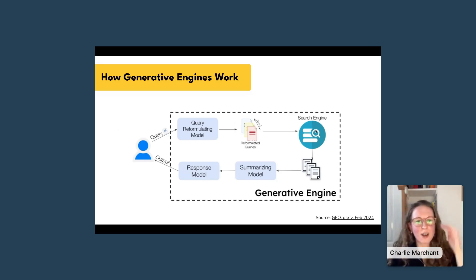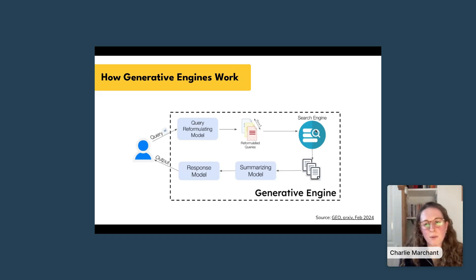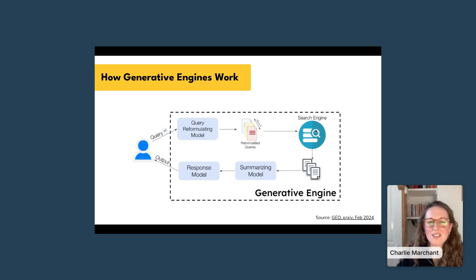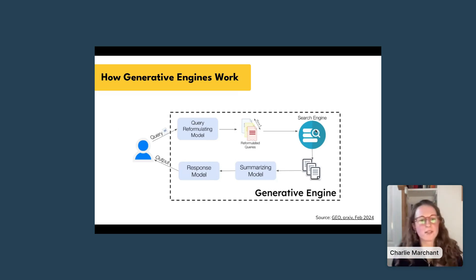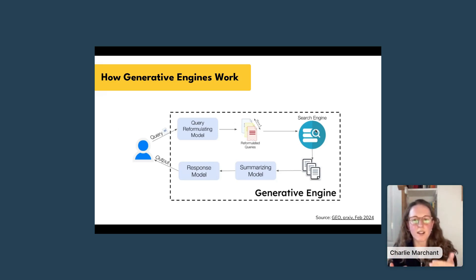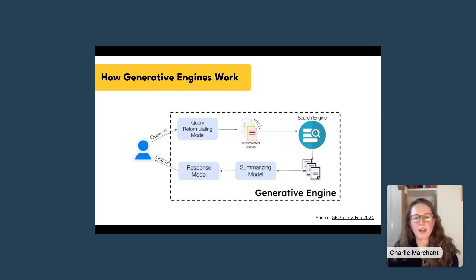Let's look at the mechanics — what's actually going on in these generative engines. This is a diagram from a GEO article, one of the earliest academic ones published on arXiv. The little blue figure on the left represents us, the searcher. When you put a query into ChatGPT or a generative engine, it reformulates your query, breaks it down into relevant sub-queries, runs those through its own knowledge and through search engines, passes results through a summarizing model, and then creates a response to output to the user.